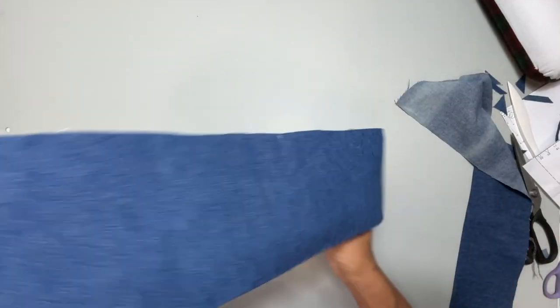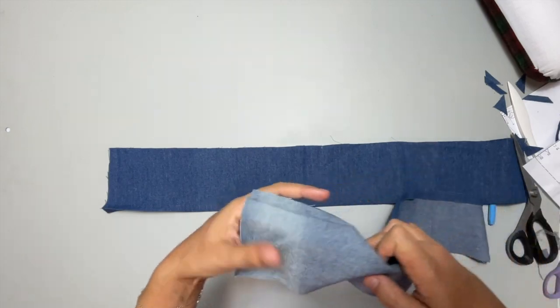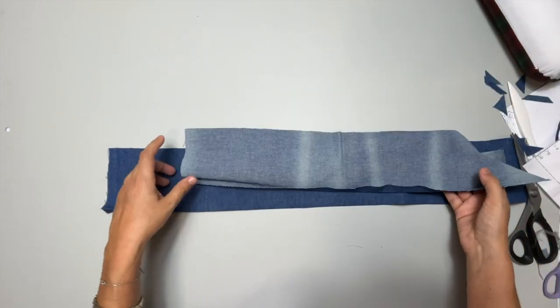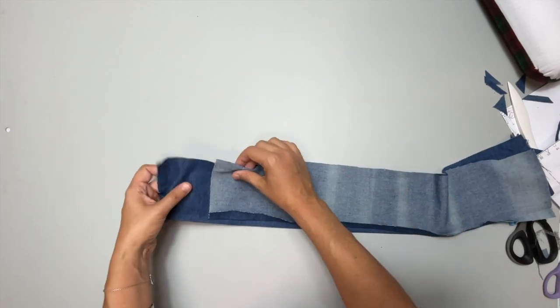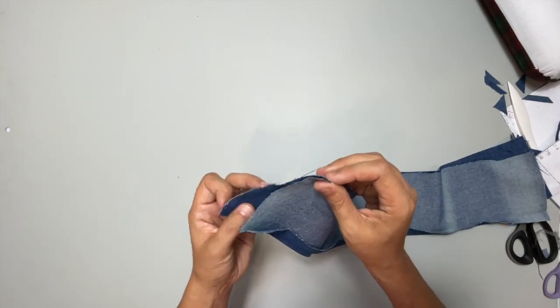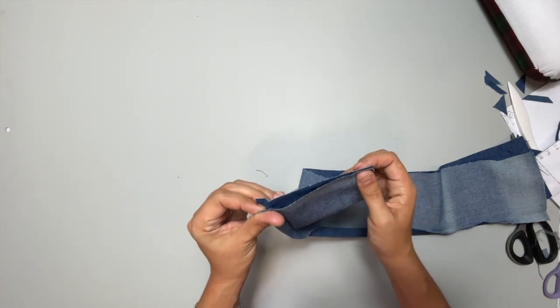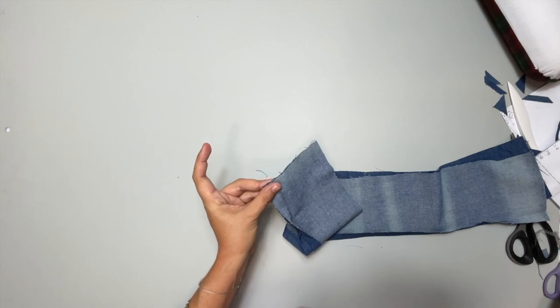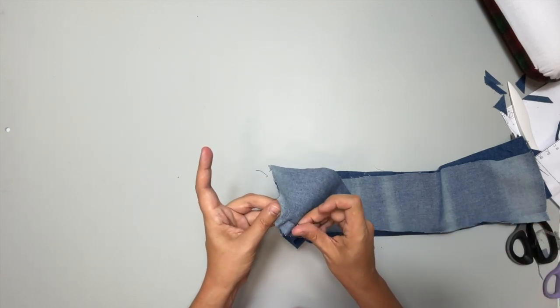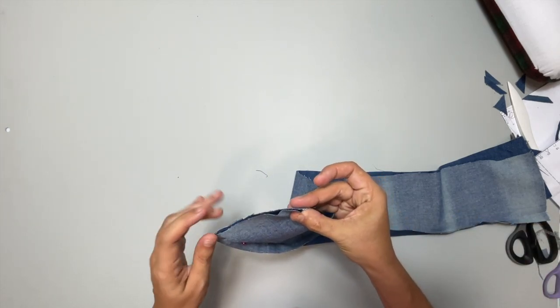Alright, so now picking up where the instructions start off with, just make sure you have your pre-pressed bottom edge on the same side. You're going to sew the short ends together, folding out that press that you just made. And you're going to sew both of the short ends together and then press them open.